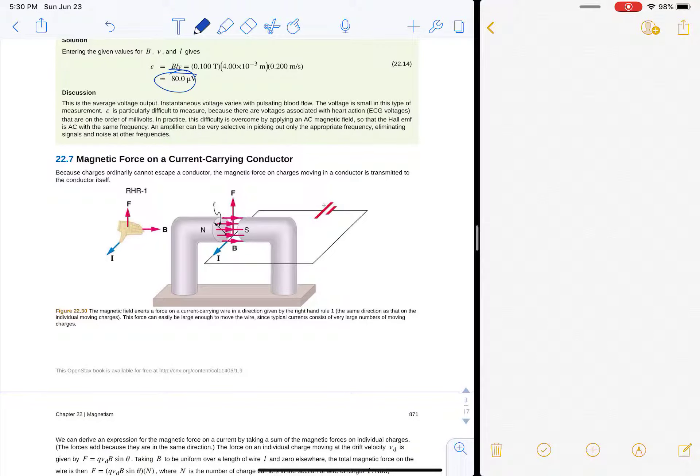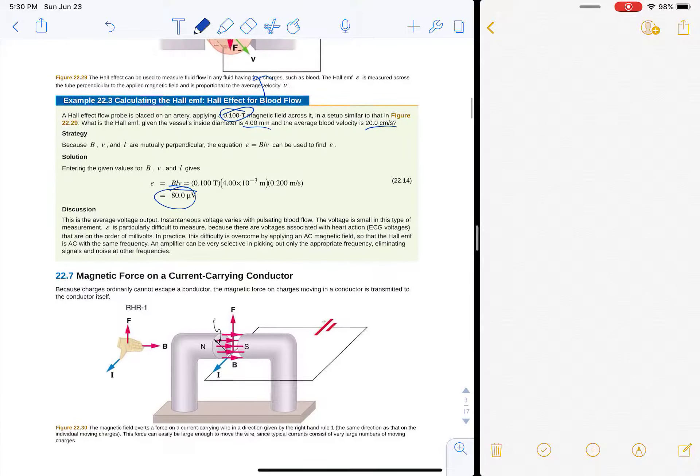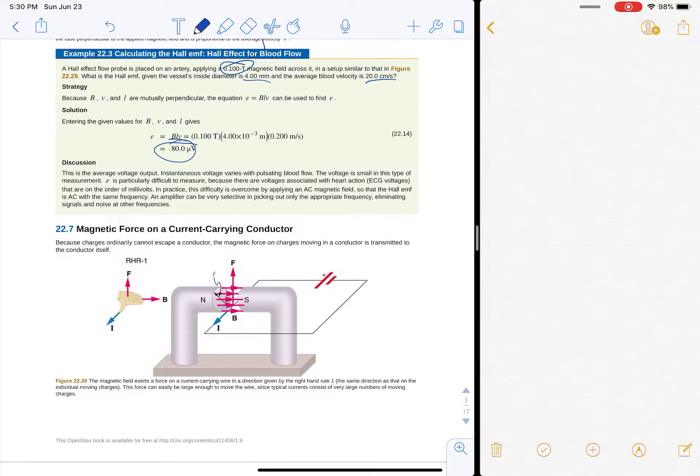So that's the Hall effect, which is the generation of an EMF when you put a conductor in an external magnetic field.